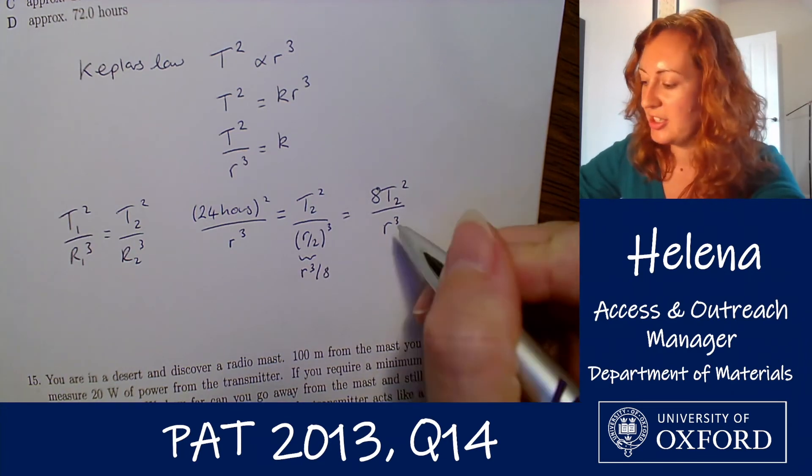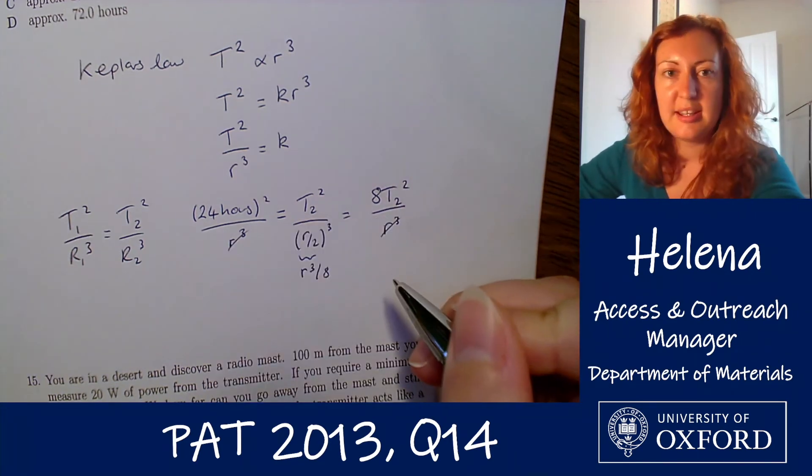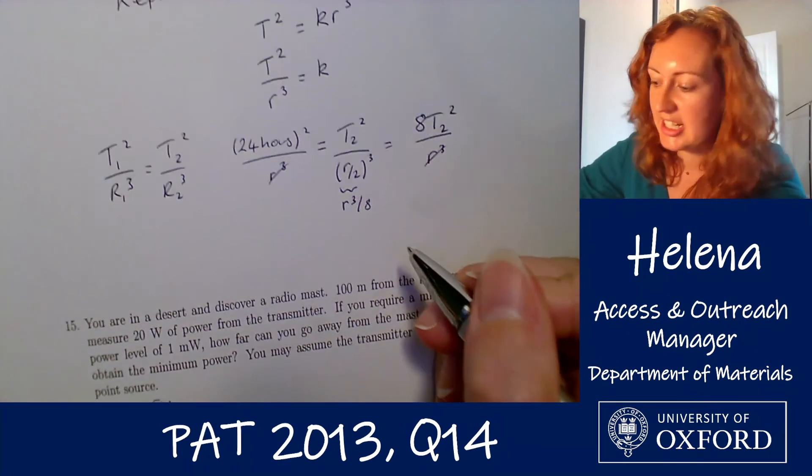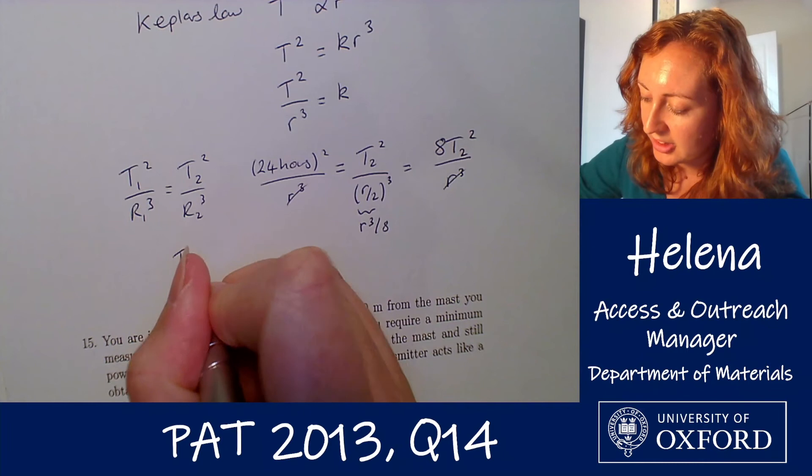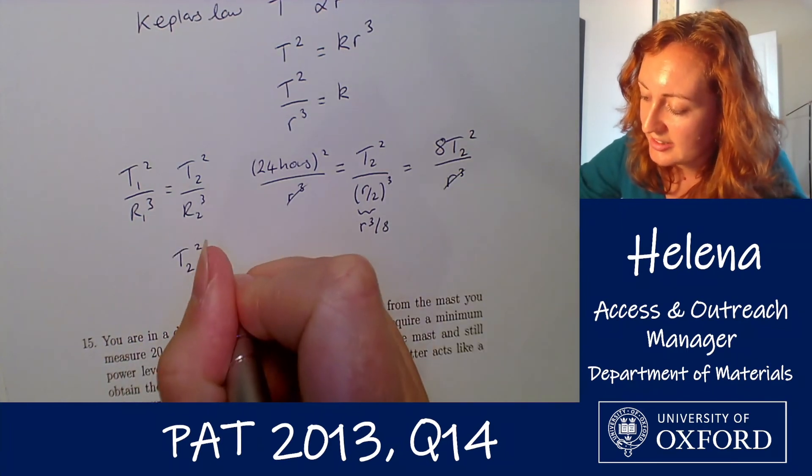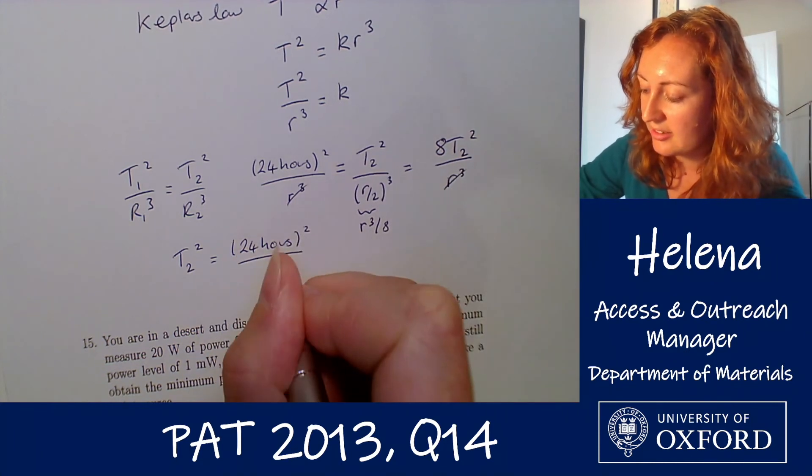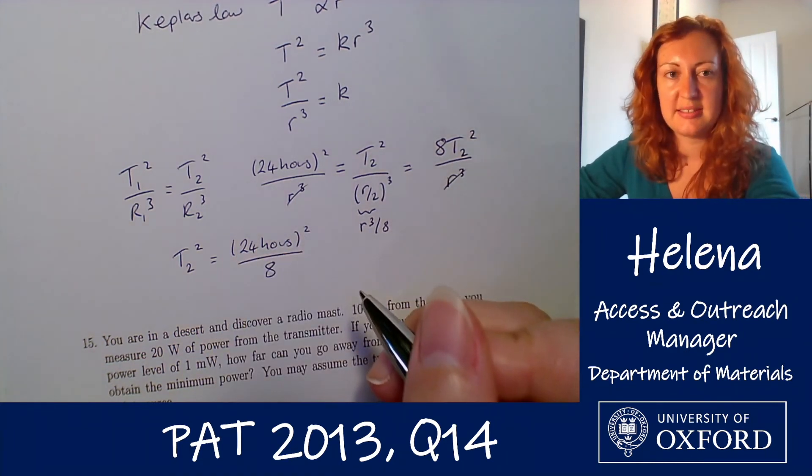Now let's simplify and rearrange. Okay so we can multiply by the r cubes to get rid of those and then if we rearrange for t2 squared here we find that t2 squared is equal to 24 hours all squared divided by 8 here. Excellent.